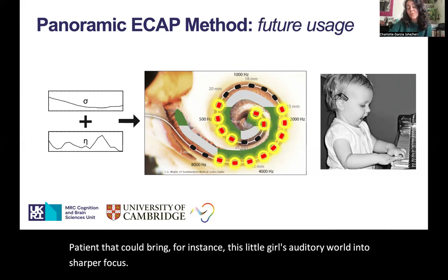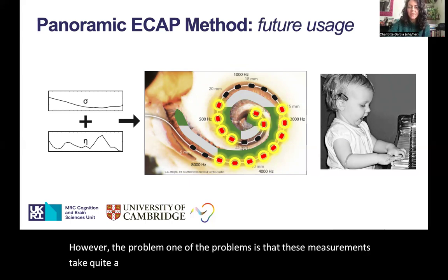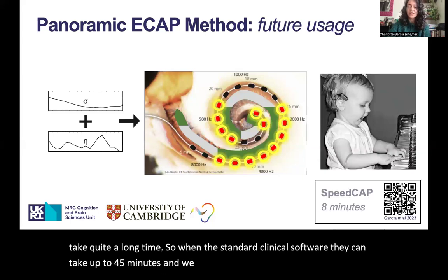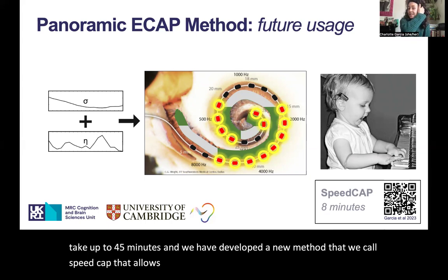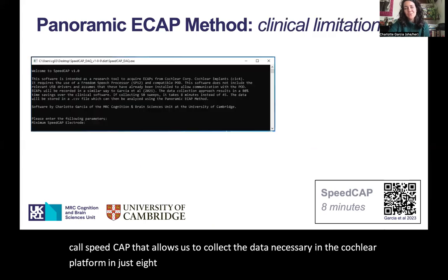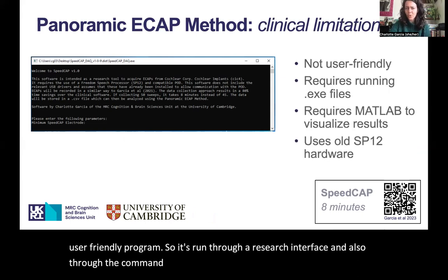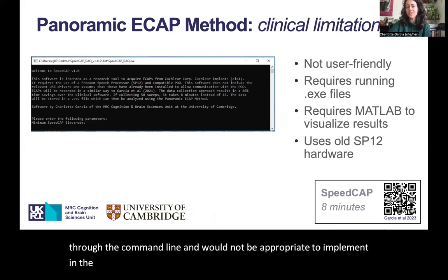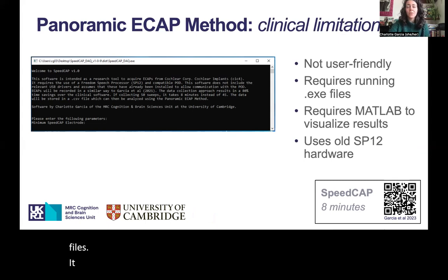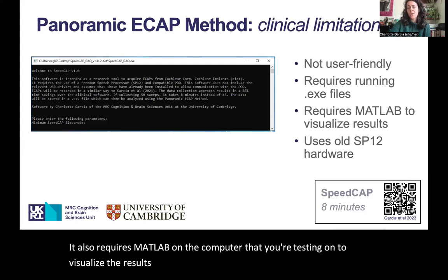However, one of the problems is that these measurements take quite a long time. In the standard clinical software, they can take up to 45 minutes. We have developed a new method called SpeedCAP that allows us to collect the necessary data in the cochlear platform in just eight minutes. But one of the issues is that it's not a user-friendly program — it's run through a research interface and the command line, and would not be appropriate to implement in the clinic as is. It requires running executable files and also requires MATLAB on the testing computer to visualize the results, and uses old cochlear hardware.